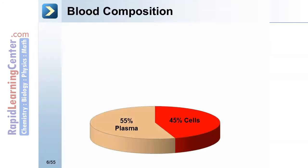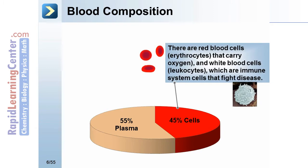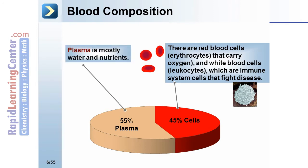Blood composition: 55% plasma and 45% cells. There are red blood cells — erythrocytes — which carry oxygen, and white blood cells — leukocytes — which are immune system cells that fight disease. Plasma is mostly water and nutrients.